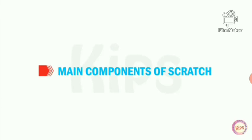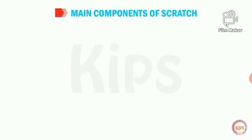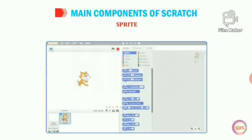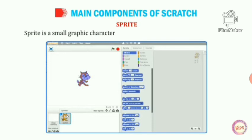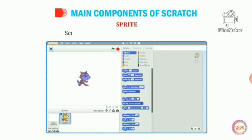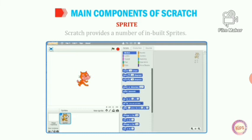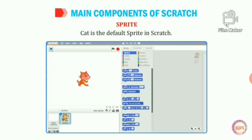Hello Class 4. Today we will know about the main components of Scratch. The first one is sprite. A sprite is a small graphical character that performs actions in a Scratch project. Scratch provides a number of inbuilt sprites. Cat is the default sprite in Scratch.